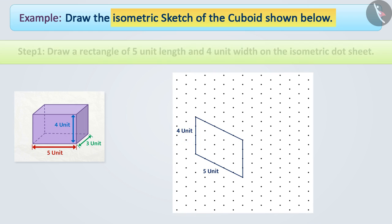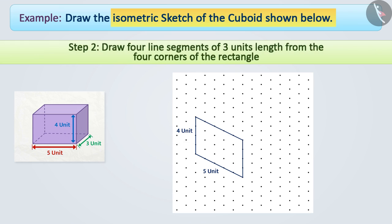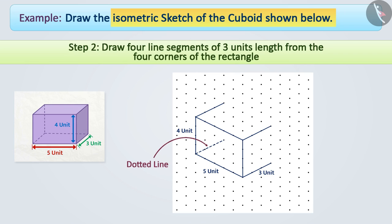Step 2: Draw 4 line segments of 3 units length from the 4 corners of the rectangle in this way. With the dotted lines, we show the hidden edges.